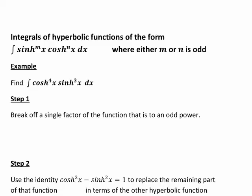The first step we do is break off a single factor of the function that is to an odd power. And if both sinh and cosh are to an odd power, you can choose either, but it's easiest to use the one that's to the lower power. In this case, however, only sinh(x) is raised to an odd power, namely to the power of 3.